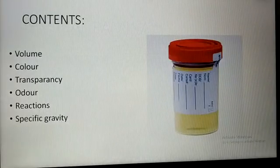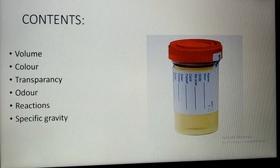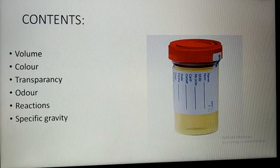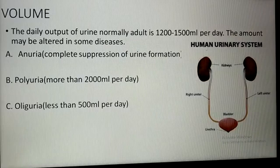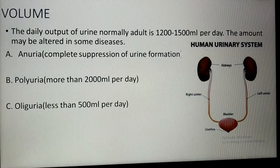The parameters studied under physical examination of urine are: volume, color, transparency, order, reactions, specific gravity, and particles. The daily urine output of a normal adult is 1200 ml to 1500 ml per 24 hours.